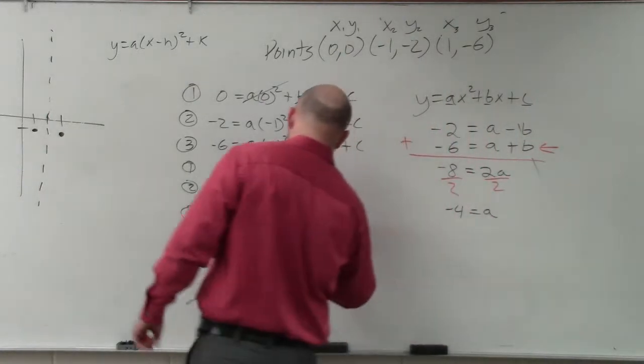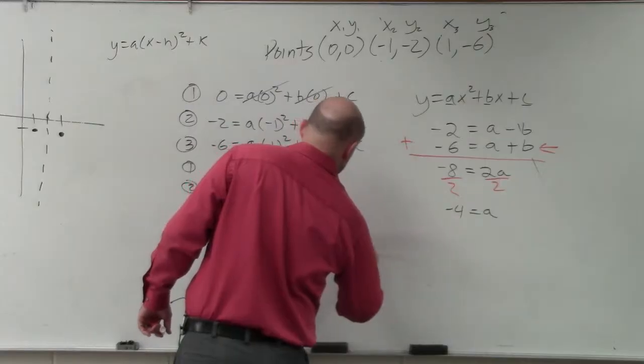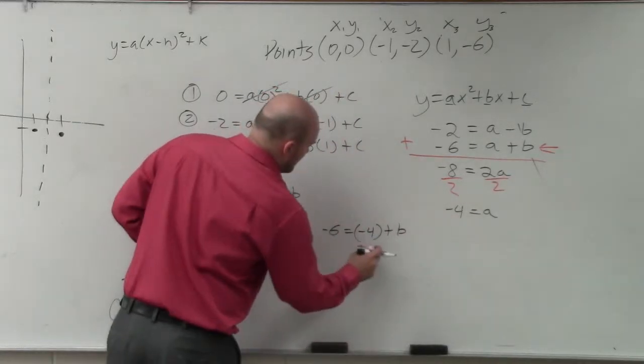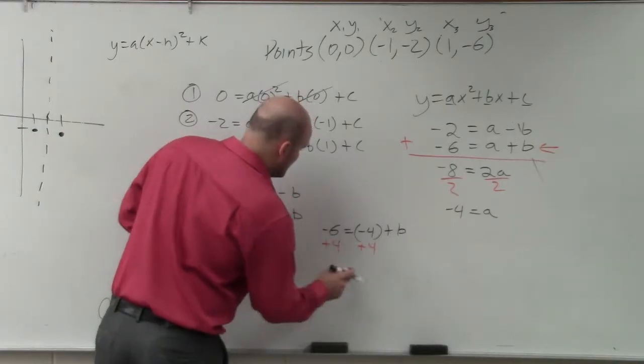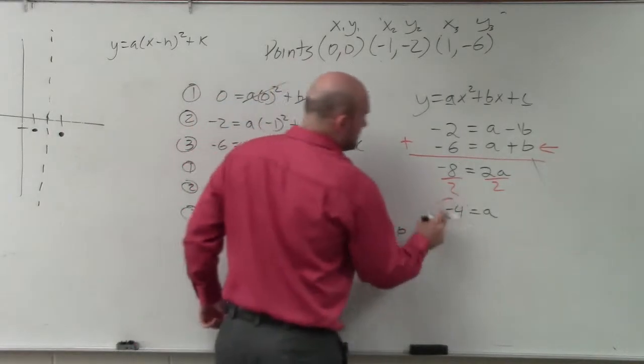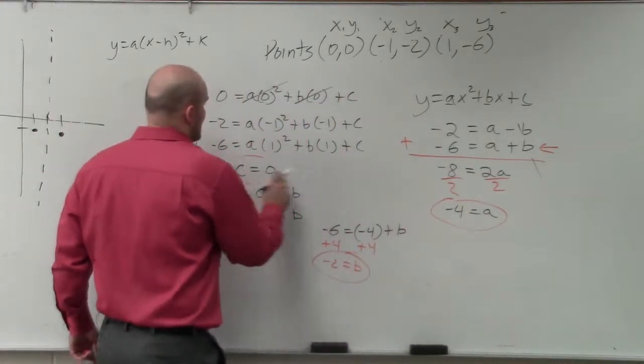So I'd have negative 6 equals negative 4 plus b. Add 4, add 4. Negative 2 equals b. So I now know what b is. I now know what a is. And I now know what c is. Yes?